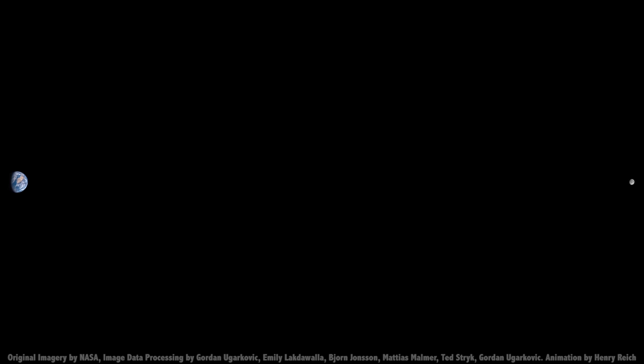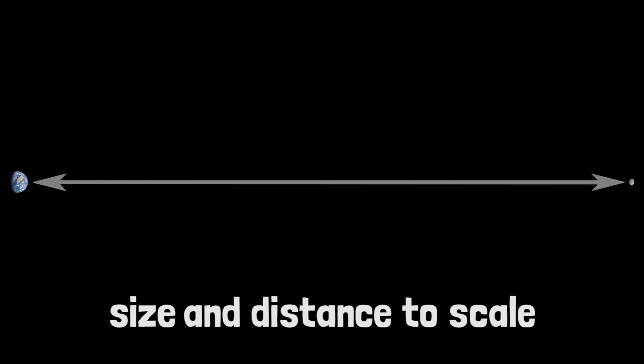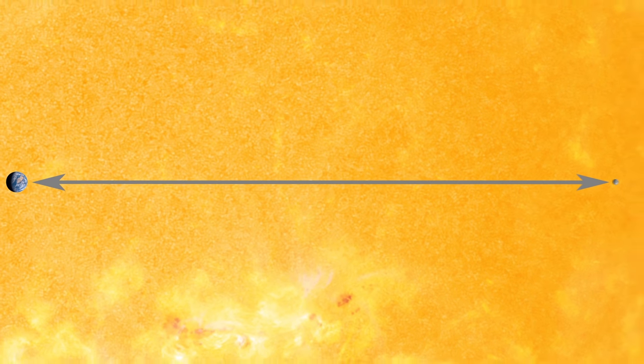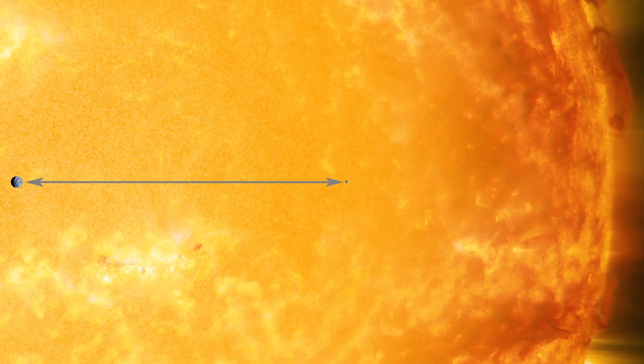Another fun coincidence is that the radius of the Sun is about twice the distance to the Moon, so if you put the Sun where the Earth is, the Moon would be just over halfway to the surface of the Sun.